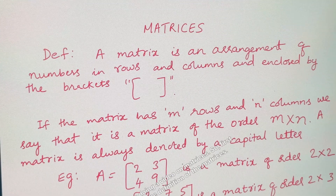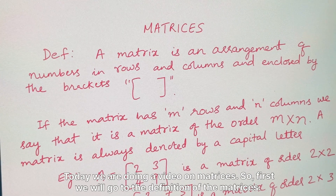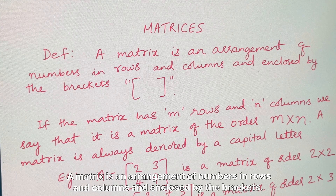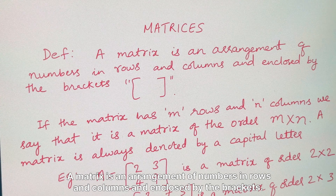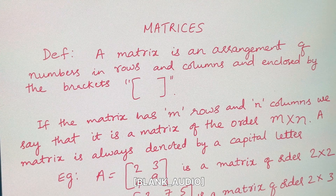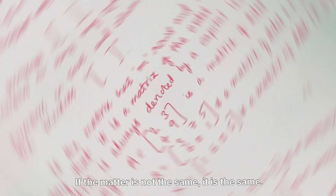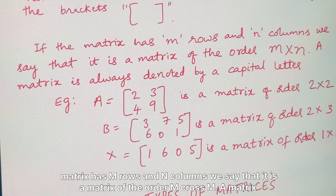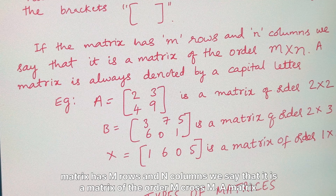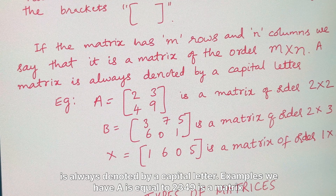Today we are doing a video on matrices. A matrix is an arrangement of numbers in rows and columns, enclosed by brackets. If the matrix has m rows and n columns, we say that it is a matrix of order m cross n. The matrix is always denoted by a capital letter.